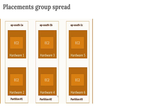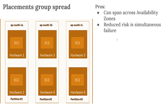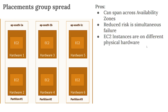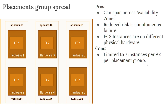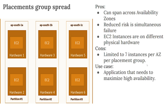If any hardware fails, hardware two or hardware three will still be there to support. The pros: can span across different Availability Zones, reduced risk of simultaneous failure, EC2 instances are on different physical hardware so if one fails another keeps working. The cons: limited to seven instances per Availability Zone per placement group.